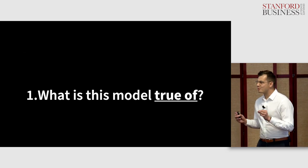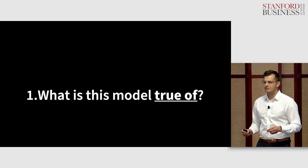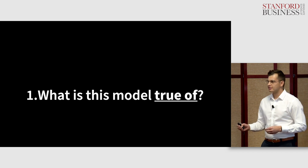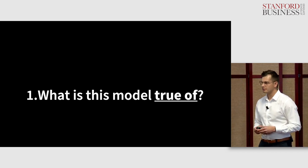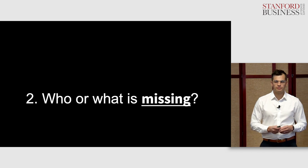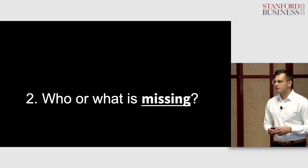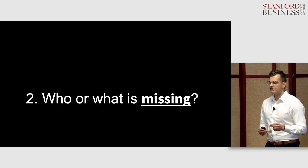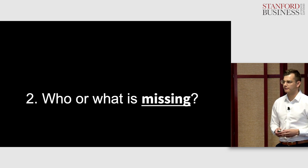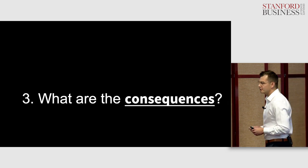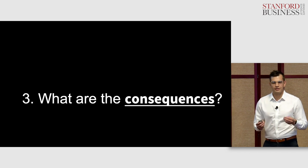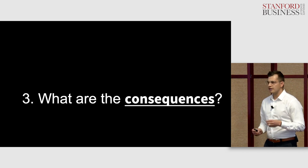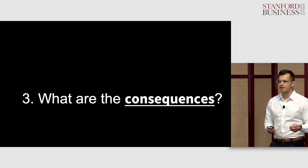Number one: what is this model true of? Every model, just like every one of our perspectives, is built upon assumptions. Bias often lurks within these assumptions. Number two: who or what is missing? Removing gender from an algorithm does not prevent gender bias — in fact, it's often how bias is found, measured, and mitigated. And number three: what are the consequences of this algorithm? Any one of us could find ourselves in a position, through our actions and decisions, to prevent the scaling of unwanted bias.